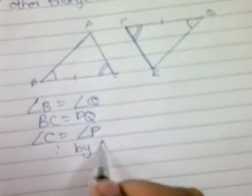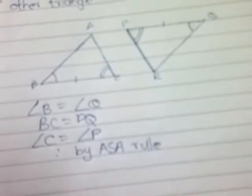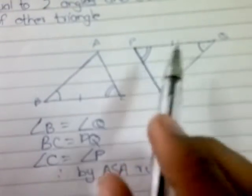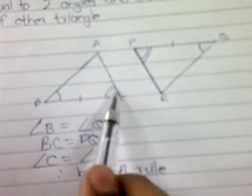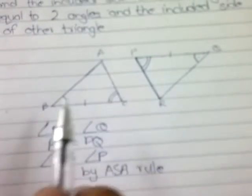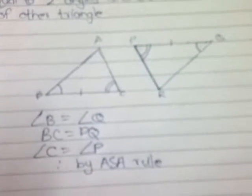One important thing to note: BC and PQ are the sides included between the two angles. That is a necessary condition. If the sides are not included between the angles, you cannot apply the ASA rule — the ASA theorem would not be valid.